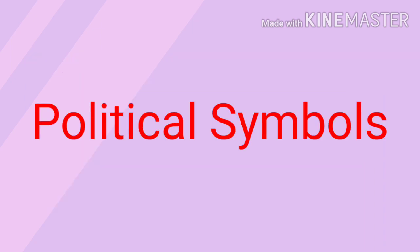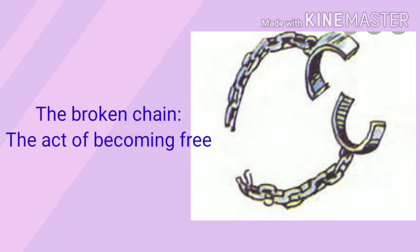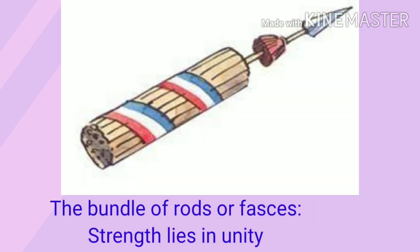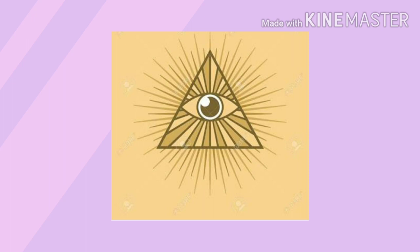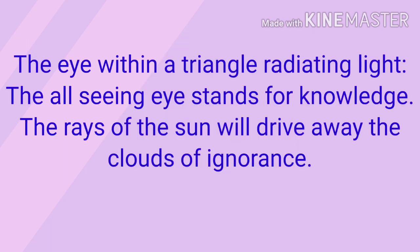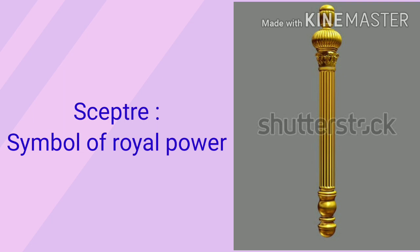Now let's have a look at some of the political symbols used in the Declaration of the Rights of Man and Citizens. The first is the Broken Chain, which stands for the act of becoming free. The Bundle of Rods or Fasces means that one rod can be easily broken but not an entire bundle — it symbolizes strength in unity. The Eye within a Triangle Radiating Light means the all-seeing eye, which stands for knowledge. The Scepter was a symbol of royal power, normally carried by kings and queens on ceremonial occasions.